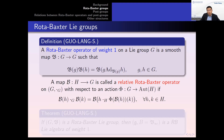We also need a more general notion: the relative Rota-Baxter operator. We need an action phi from G to Aut(H), an action of the group G on the group H. Then a map B from H to G is called a relative Rota-Baxter operator if the following equation is satisfied. We only replace the adjoint action by this arbitrary action — it is a natural generalization.